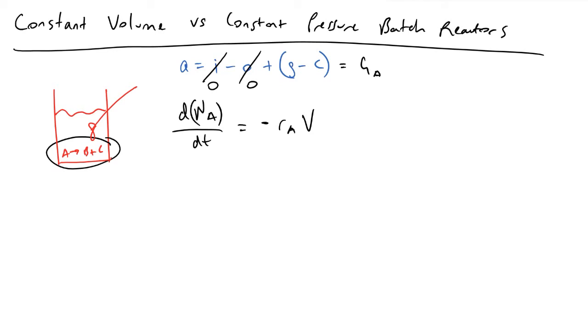So this applies to both constant volume and constant pressure batch reactors. What we will do is rearrange this equation to solve for rA. We get minus rA is equal to one over V times dNA/dt.